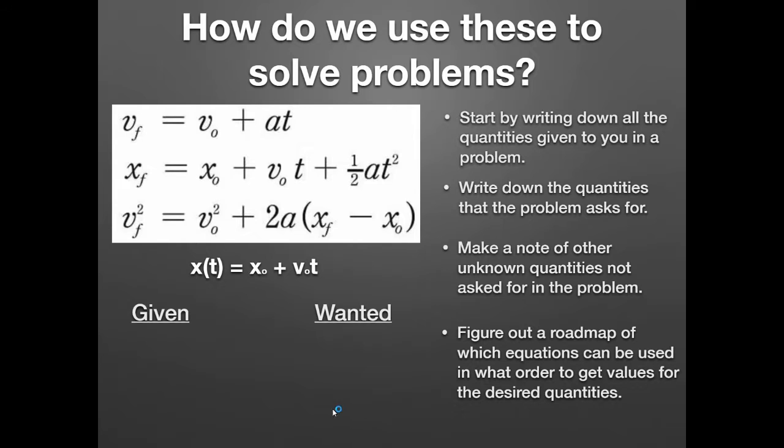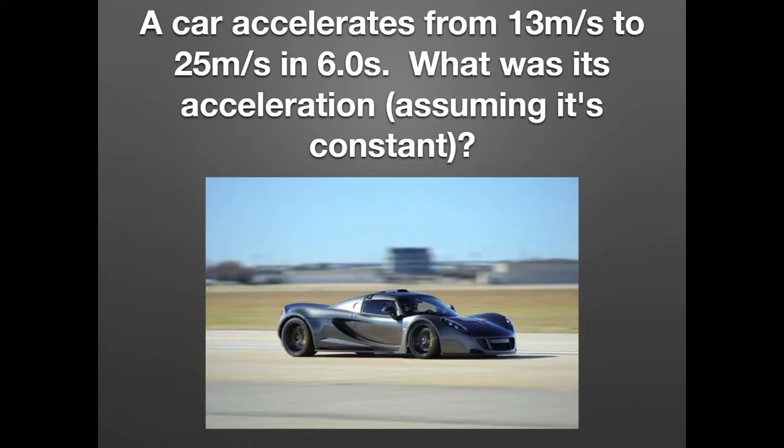And then, once you have that done, it's much easier to figure out the roadmap of which equations can be used and in what order to get the values for the desired quantities. Usually for easier problems, you would just pick an equation that has all the given info in it plus just one unknown quantity. For harder problems, you might have to use one equation to get something you need, and another equation to solve for a desired quantity. That's common. We're going to start with some easier problems in this lesson.